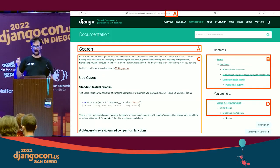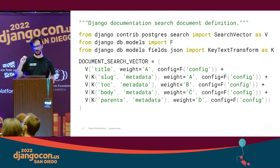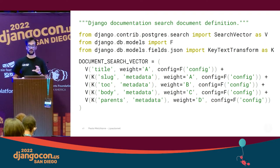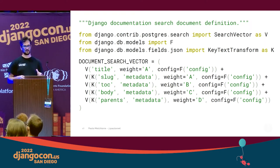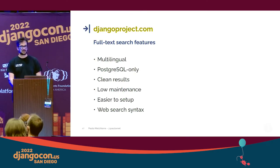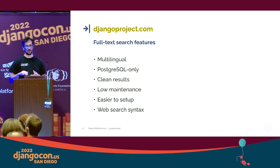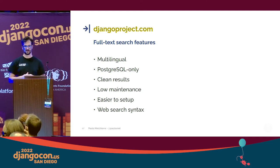This is a Django documentation page, and these are the parts we are now using to build the search documents. Each part of the document has a different weight for building the ranking of results. In the Django project code, you can see the definition of the search document: different weights for different parts, the language configuration extracted directly from the model field, and most parts extracted from the JSON field which contains the document generated by Sphinx. Today the Django website full-text search is multilingual, based only on Postgres, returns clean results, is low-maintenance, much easier to set up than before, and also supports web search syntax.